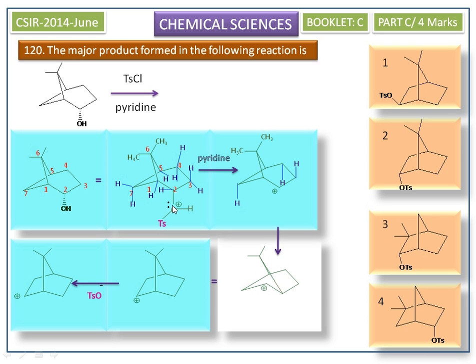So the ester formation takes place with retention of configuration. In the reactant molecule, the OH group is in the axial position, so the tosylate group should also be in the axial position.